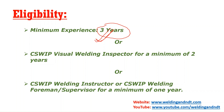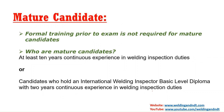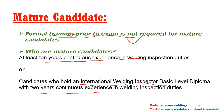There are other eligibility options. If you have taken the CSWIP visual welding inspector exam, only 2 years of experience is required. If you have done the CSWIP welding instructor or CSWIP welding foreman exam, only 1 year of experience is required. For mature candidates — those with more than 10 years of continuous experience in welding inspection — formal training prior to the exam is not required, though training is recommended. Additionally, any candidate holding an international welding inspector basic level diploma with 2 years of continuous experience is also classified as a mature candidate.